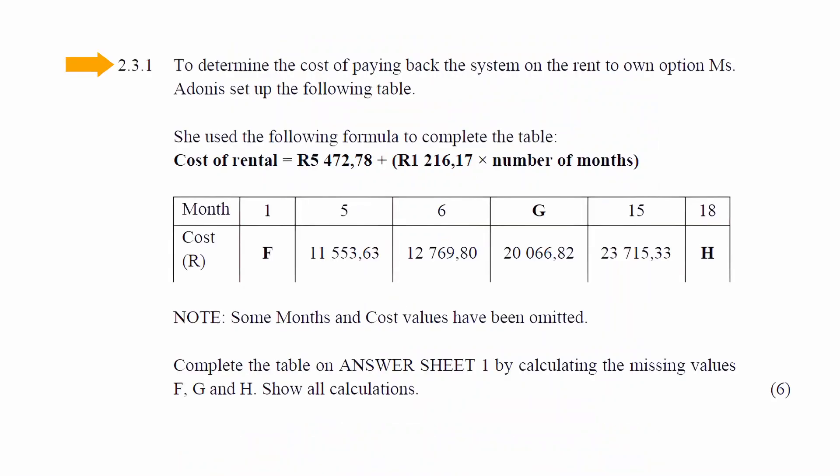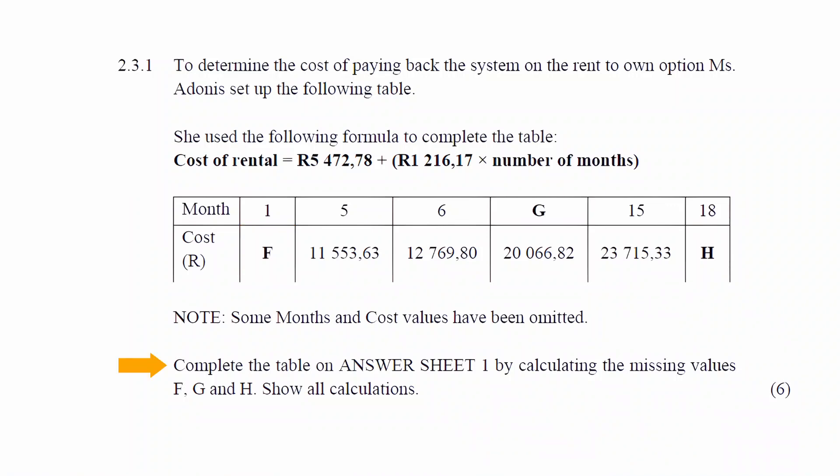Question 2.3.1 states that to determine the cost of paying back the system on the rent-to-own option, Ms. Adonis sets up a table using the formula: cost of rental = R5,472.78 + R1,216.17 × number of months. The table lists months in the first row and the corresponding cost in the second row. There are three unknown values labelled F, G and H, which you must calculate showing all working.